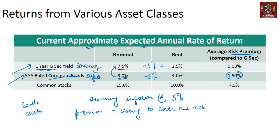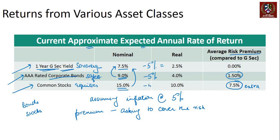This might be the best corporate bond, but compared to the G-Sec it is still risky — there is a finite probability that even the safest company may not repay. Moving on to common stocks, the general expectation in the market is that common stocks give about fifteen percent return; that's also the historical number in India. The spread between fifteen and seven and a half percent means you expect an extra seven and a half percent return if you invest in equities, because of the bigger risk. Adjusting for inflation, you get a real return in equities close to ten percent.